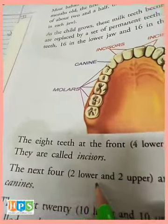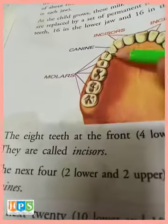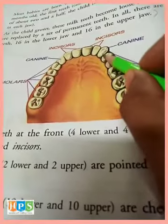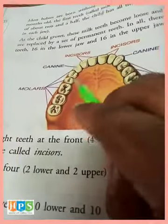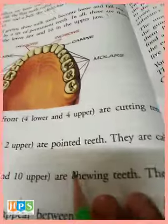The next 4 — 2 lower and 2 upper. Jo yahan ke 2 lower jaw mein aur upper jaw mein hote hain, jo yahan ke baad ke hain. They are called canines. Jo pointed teeth hote hain — they are pointed teeth, and they are called canines. Jo kanines kehte hain.